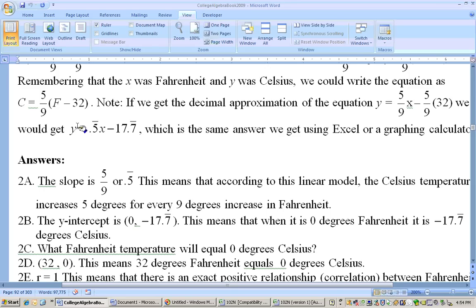and if I put 0 in for y here and solve it, I would add the 17.7 and divide by, or actually 17.7 bar, carry a lot of 7s, and divide it by the 0.5 bar, and you would end up with the x-intercept of 32, and it's actually 32, 0.